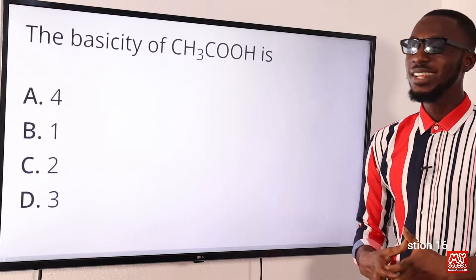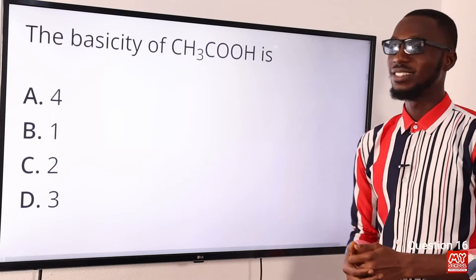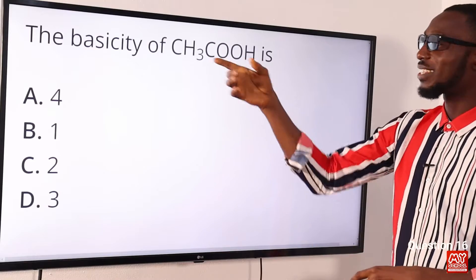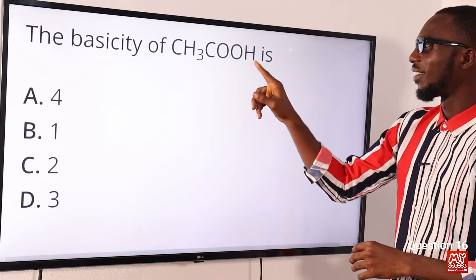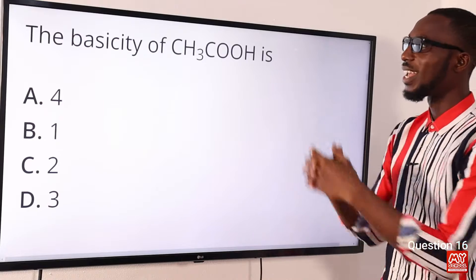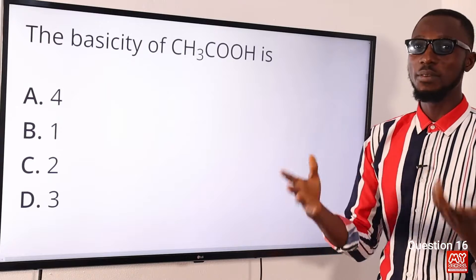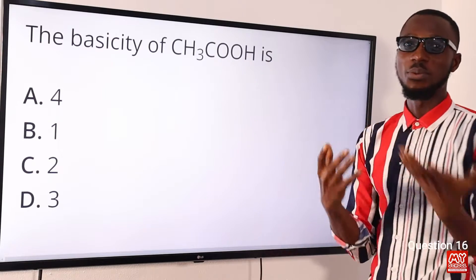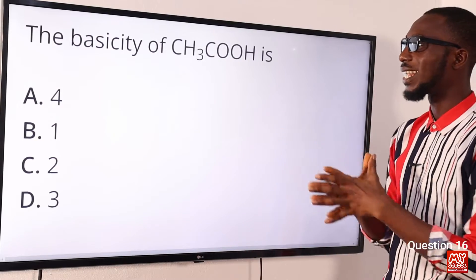Question 16: The basicity of ethanoic acid CH₃COOH is what? When we talk about basicity of an acid, we are talking about the number of replaceable hydrogen ions. For ethanoic acid, the number of replaceable hydrogen ions is just one. So we can tell the basicity is one — that's why we refer to it as a monobasic acid. H₂SO₄ is dibasic; H₃PO₄ is tribasic. The correct answer is option B, one.